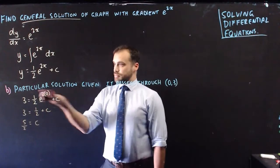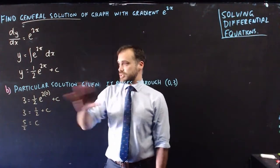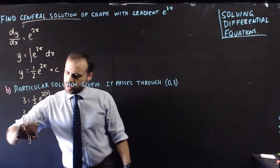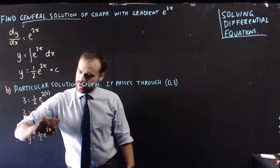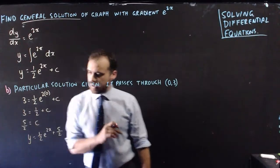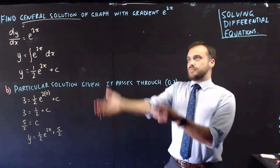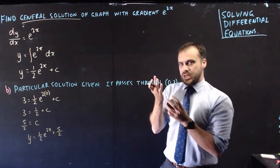Our final particular solution to this equation is y equals (1/2)e^(2x) plus 5/2. This is what we mean by a general solution versus a particular solution.